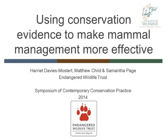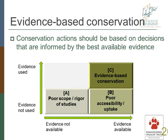I'm going to talk about a small project that we've been working on for what seems like forever, because we are conservation practitioners and don't ever have time to do anything. So looking at using conservation evidence to make mammal management more effective. This is a slightly different sort of schematic from the ones we saw this morning, but essentially the main point is that conservation actions should be based on decisions that are informed by the best available evidence. I've come up with a sort of three-quadrant thing here.